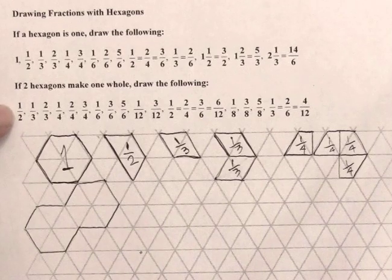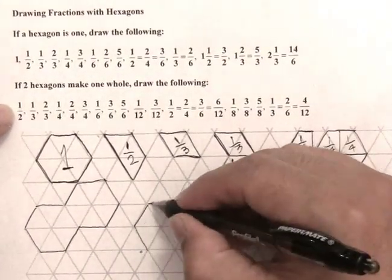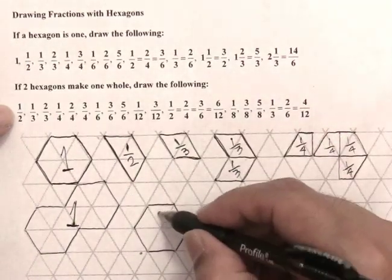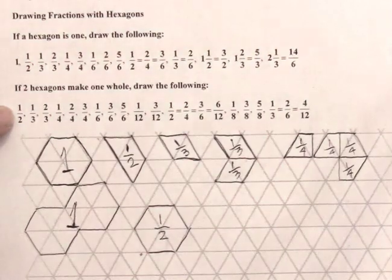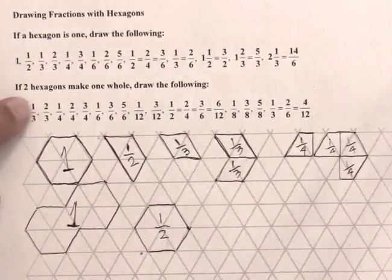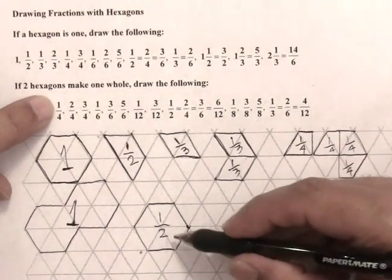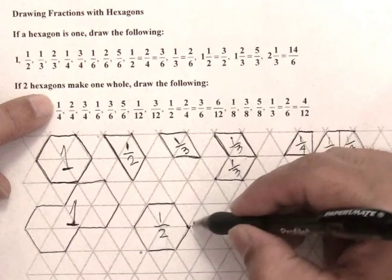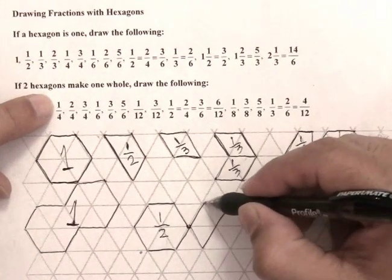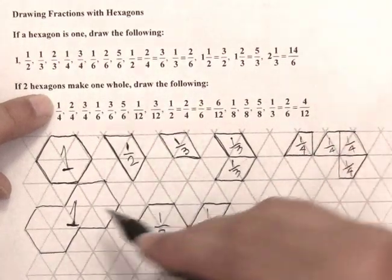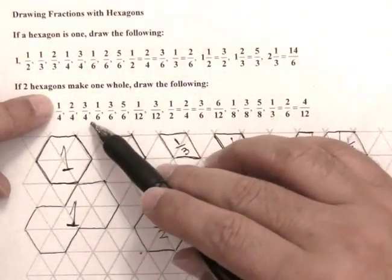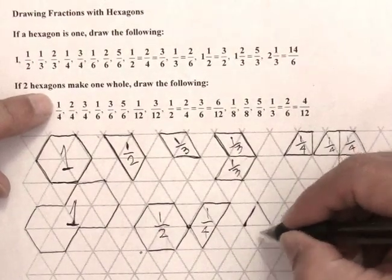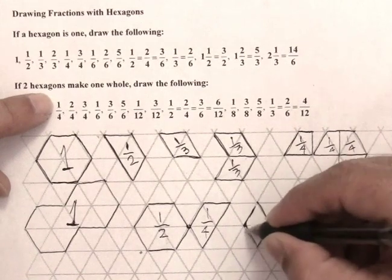So now half of that is going to look like this. Since this whole thing is one, this is half of that. One third of that I'll leave as a challenge. Two thirds — one fourth: if I divide this into four pieces I'm going to get something like this. This is one fourth. Then we have two fourths, three fourths. One sixth: if we break this into six equal pieces we would get something like this, so this is one sixth.